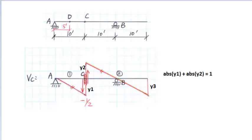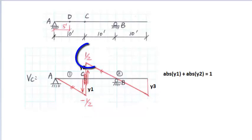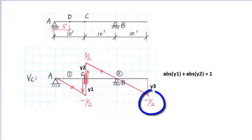According to the geometry, we can get Y1 equals negative one half, Y2 equals one half, and Y3 equals negative one half.